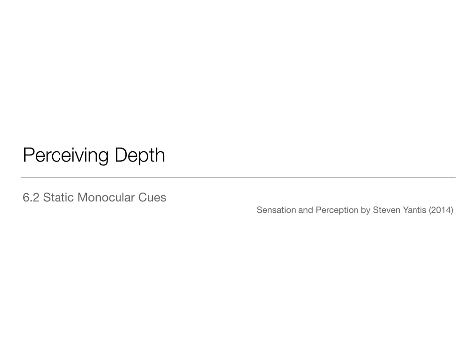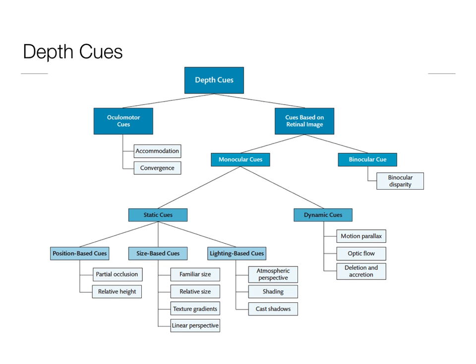Dr. Atchison here. We're still talking about Chapter 6, Perceiving Depth, and we are in our second lecture talking about static monocular cues.